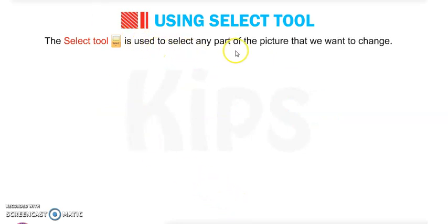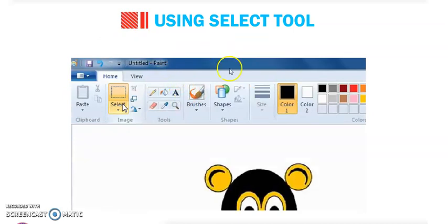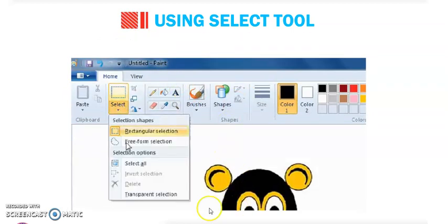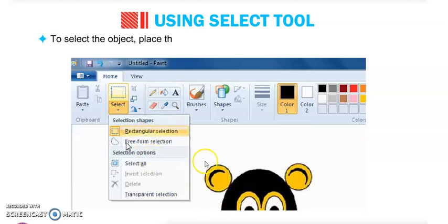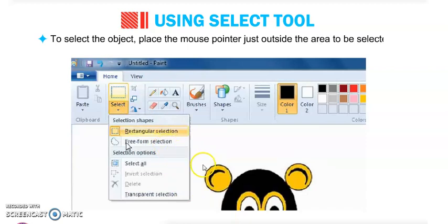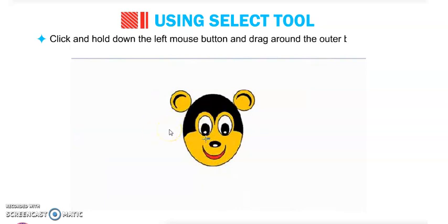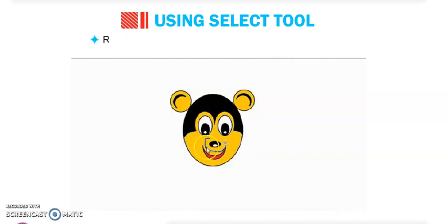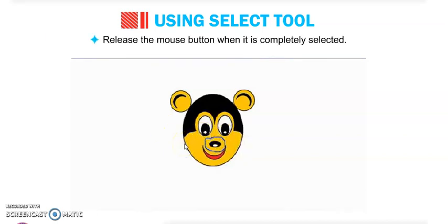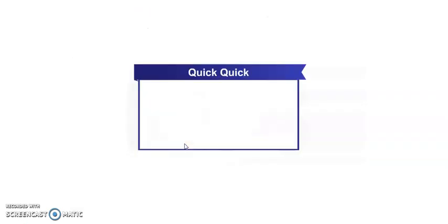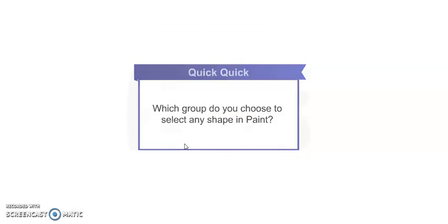Next tool is the Select tool. It is used to select any part of the picture. Draw the Mickey Mouse figure, then click on the Rectangle Selection tool. There are two selection tools: the Rectangle Selection tool and the Free Form Selection tool. To select an object, place the mouse pointer just outside the area to be selected, then click, hold the left mouse button, and drag around the outer boundary of the object. Release the mouse button when it is completely selected.